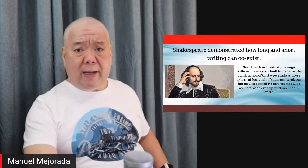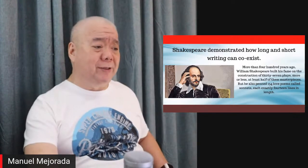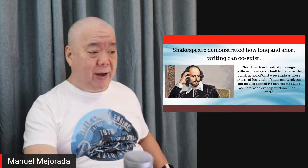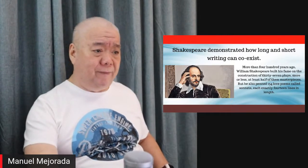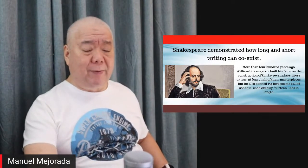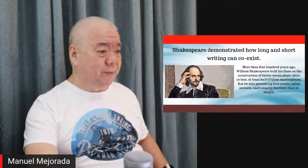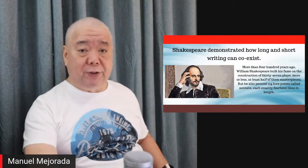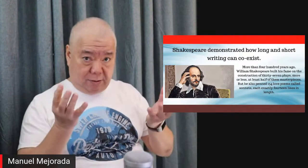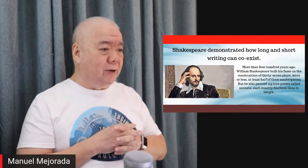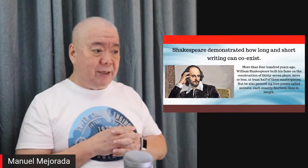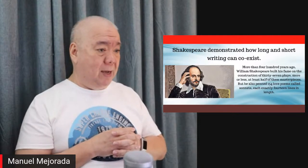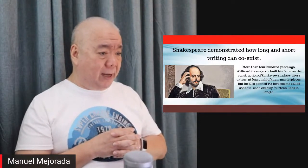To be a good writer, you have to be familiar with the masters, the great writers of a lifetime. One of them will be William Shakespeare. William Shakespeare demonstrated how long and short writing can coexist. More than 400 years ago, William Shakespeare built his fame on the construction of 37 plays, at least half of them masterpieces.